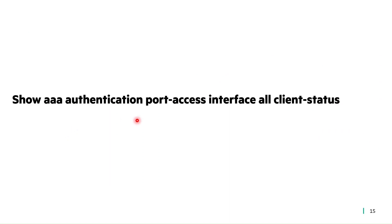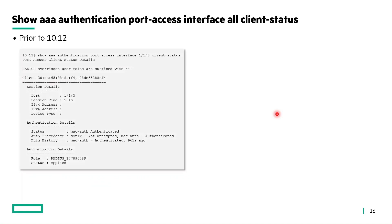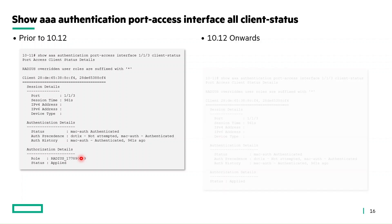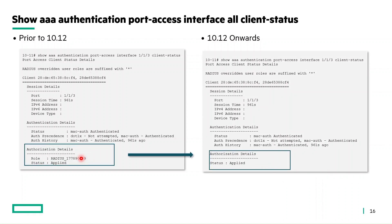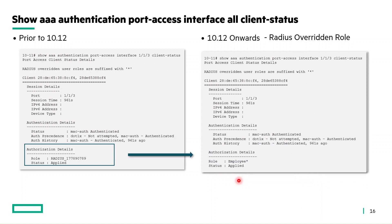Let's look at the enhancement in the show AAA authentication port access interface all client status show command. Prior to 10.12, for roles derived from RADIUS VSAs, the client status show command displayed 'radius_' followed by a random number, since these roles are only derived from RADIUS VSAs and have no actual name. From 10.12 onwards, this will be displayed as empty since there is no role name. In case of a RADIUS overridden role, it will display only the base role name suffixed with the asterisk symbol.